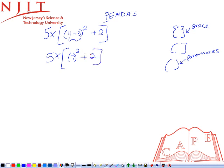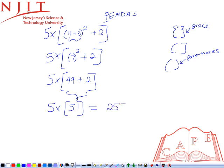Then what you must do next according to the order of operation rule is the exponent. So 5 times 7 to the second power gives you 49. 49 plus 2. Then what you must do next is whatever is inside the bracket. So 5 times 49 plus 2 gives you 51. 5 times 51 gives you 255. That is your final answer.